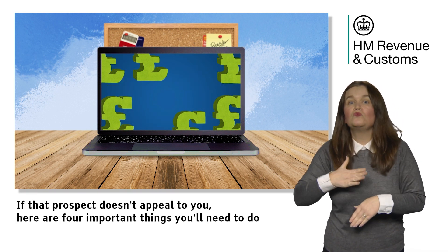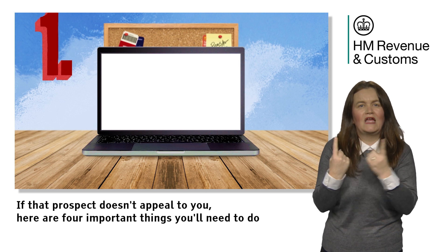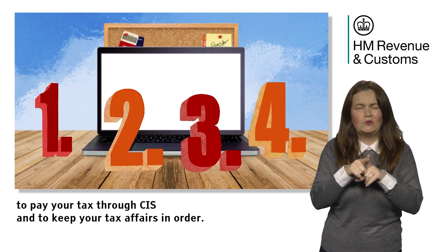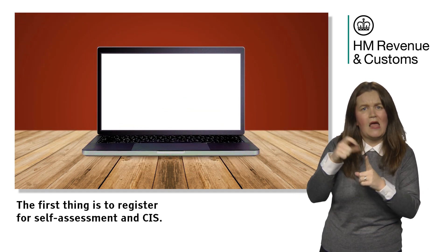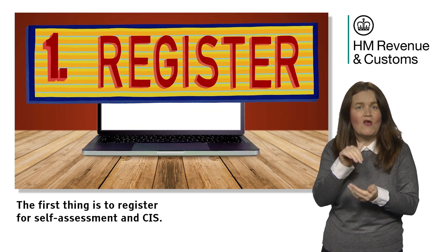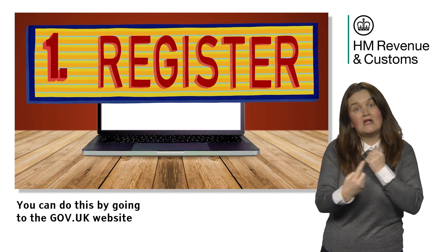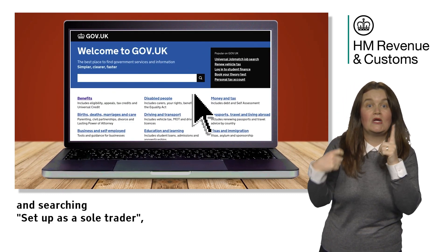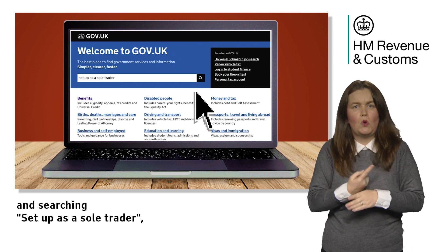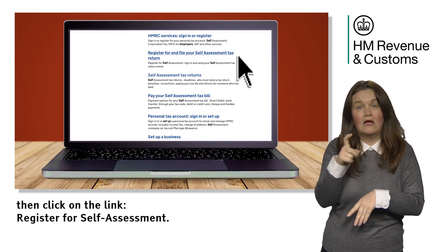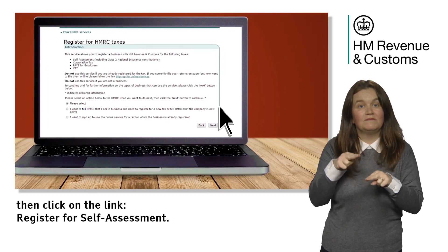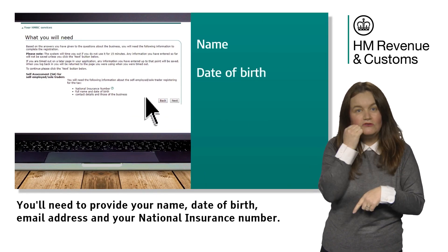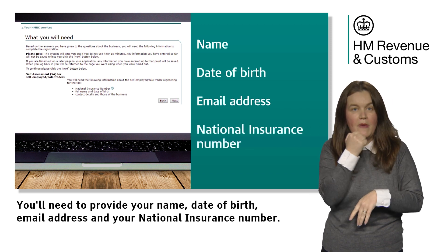If that prospect doesn't appeal to you, here are four important things you'll need to do to pay your tax through CIS and to keep your tax affairs in order. The first thing is to register for self-assessment and CIS. You can do this by going to the gov.uk website and searching 'set up as a sole trader', then clicking on the link 'register for self-assessment'. You'll need to provide your name, date of birth, email address and your national insurance number.